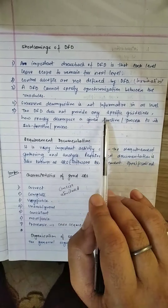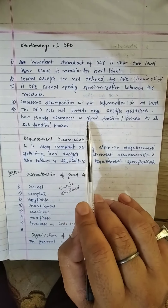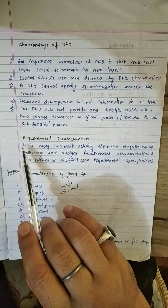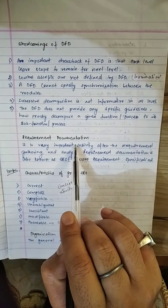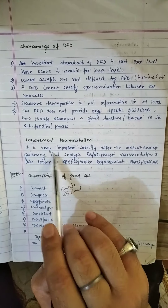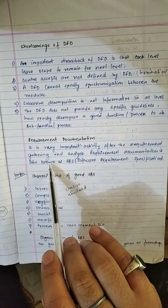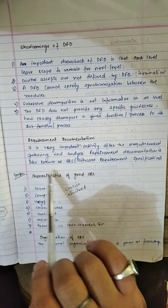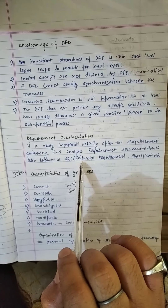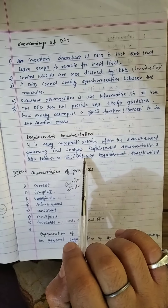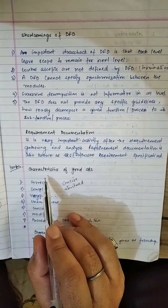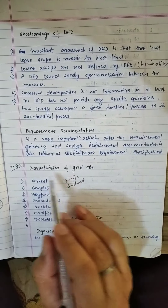The DFD does not provide any specific guideline on how exactly to decompose a given function or an oblique process into its sub-functional processes. Next, requirement documentation is the last topic during requirement engineering. It is a very important activity after requirement gathering and analysis. Requirement documentation is also known as SRS — software requirement specification, which was already discussed in the previous lecture. Now, concluding with the very important topic: organization and characteristics of a good SRS.